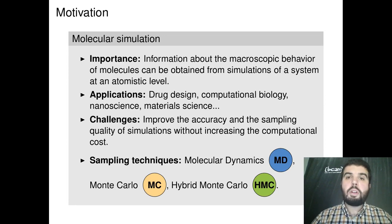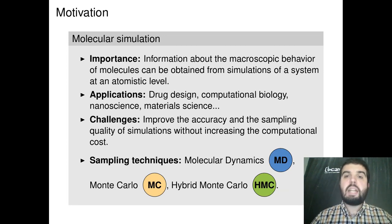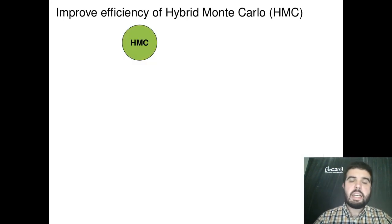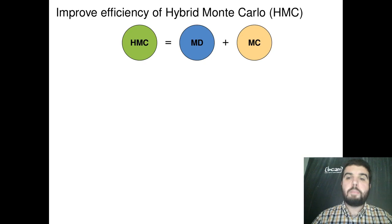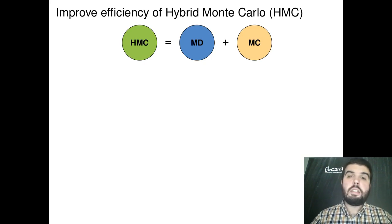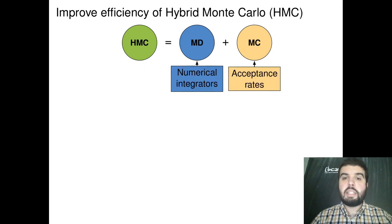We have mainly worked with three sampling techniques and their combinations. These techniques are molecular dynamics, Monte Carlo, and hybrid Monte Carlo. Hybrid Monte Carlo, or HMC, can be understood as a combination of molecular dynamics plus Monte Carlo, meaning that it's a combination of a deterministic part and a stochastic part.